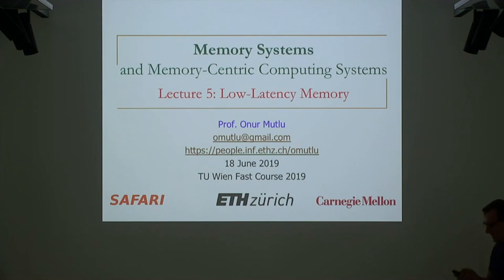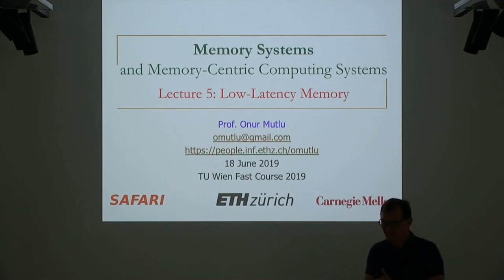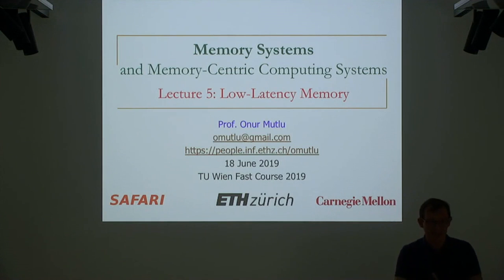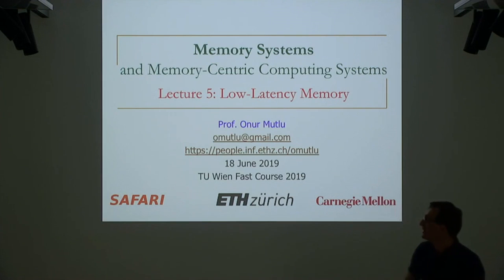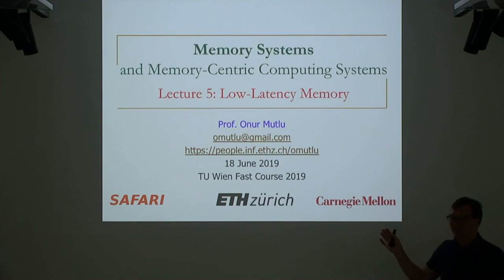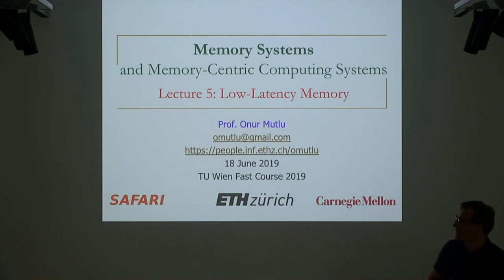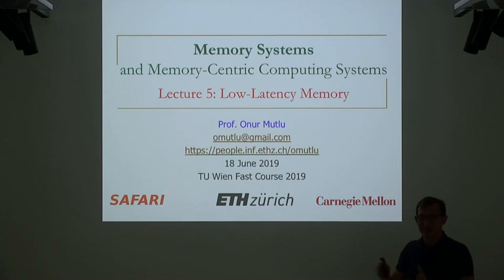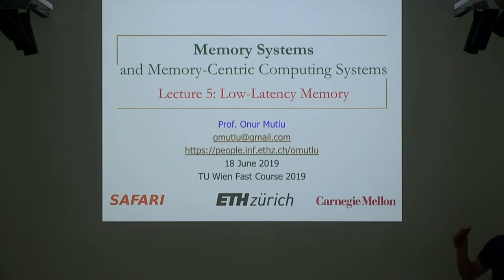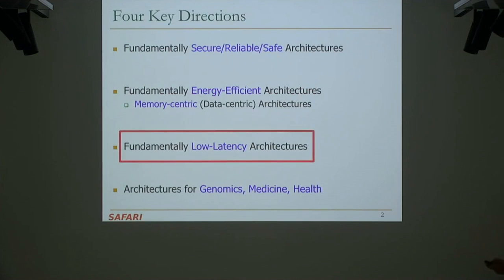Processing in memory is one way of reducing latency — you're reducing the distance of the computation from the data. But what I'm going to describe here is an orthogonal way of reducing latency. If you really want to be data-centric — low latency, low energy access to data — you want computation closer to data as well as very fast memory units. This lecture is about faster memory units.